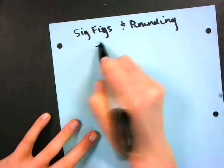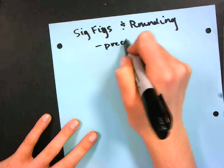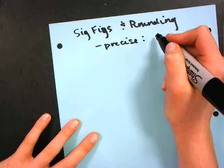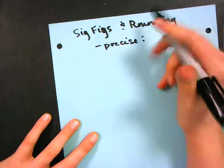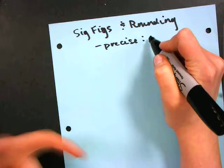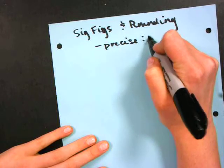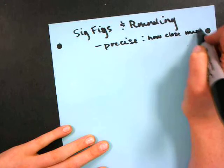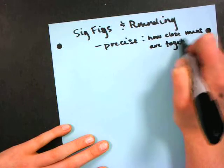So we use significant figures when we are trying to tell how precise we were. And precision of course means how good were our measurements, basically, so like how often can we repeat these results over and over again. So precise is how close our measurements are together.